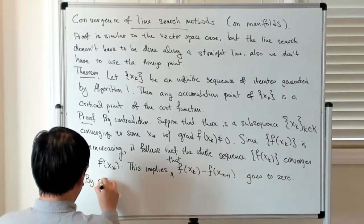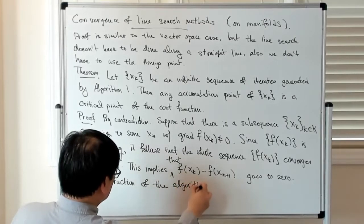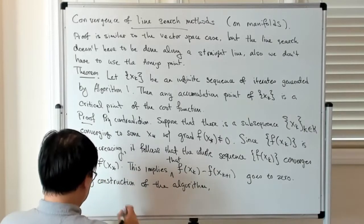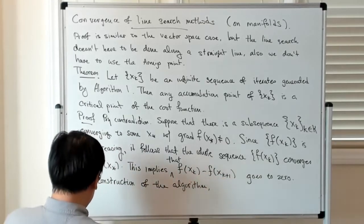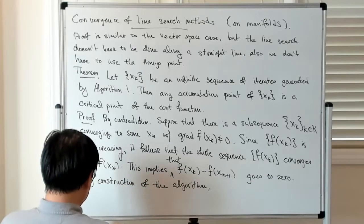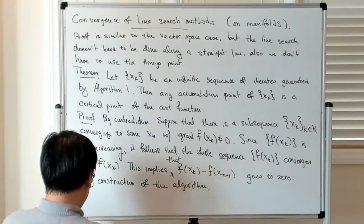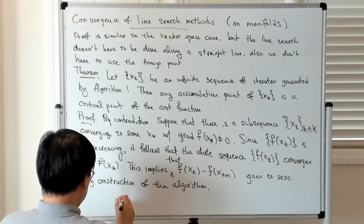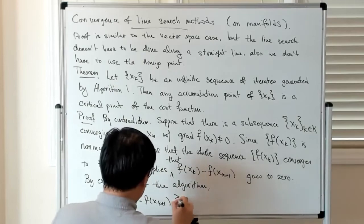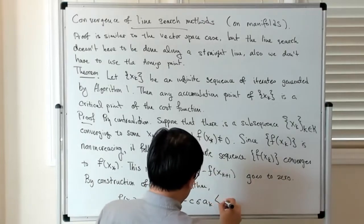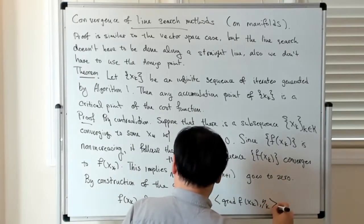And then by construction of the algorithm, we have this difference. The algorithm has an expression for the difference in iterates — there was a condition which the point you choose has to satisfy, having to do with comparing the descent with the descent you would expect from the Armijo point. So: f(x_k) minus f(x_{k+1}) is greater than or equal to minus c·σ·a_k times the inner product between the gradient of f at x_k with the search direction at the point x_k.